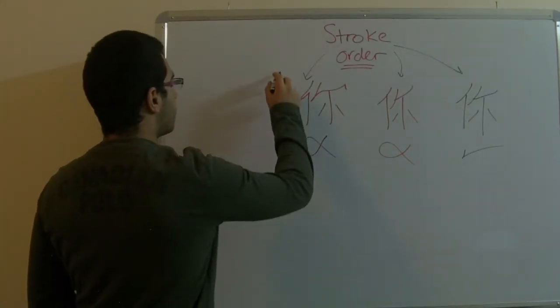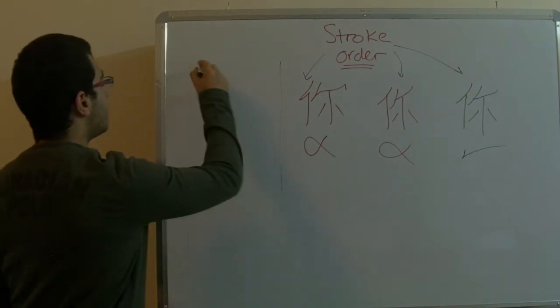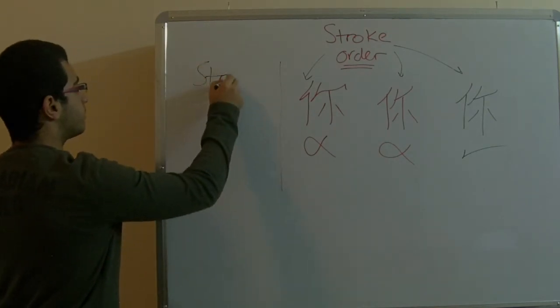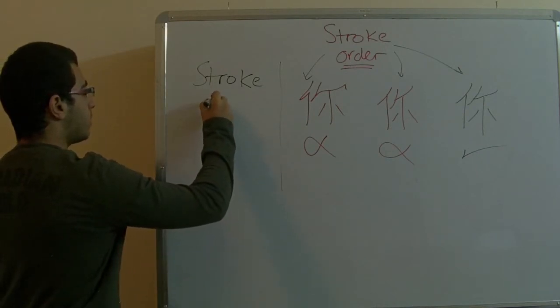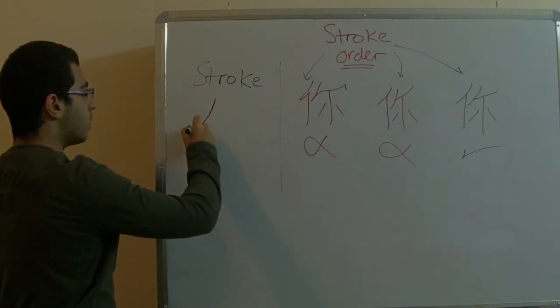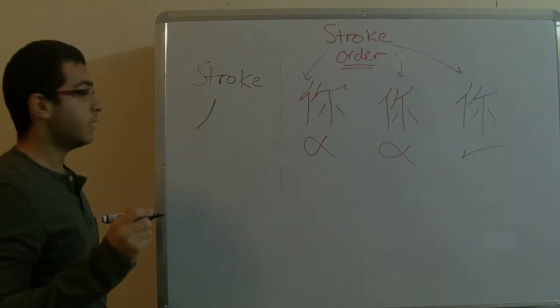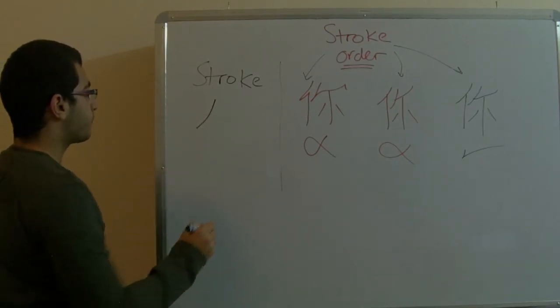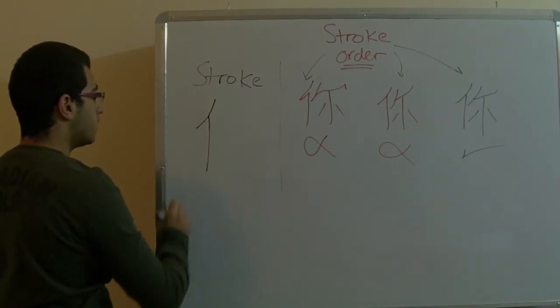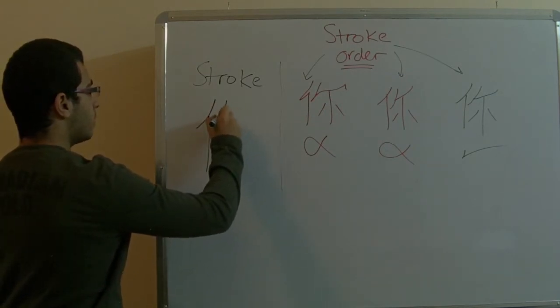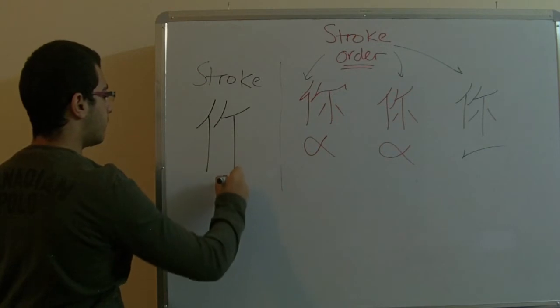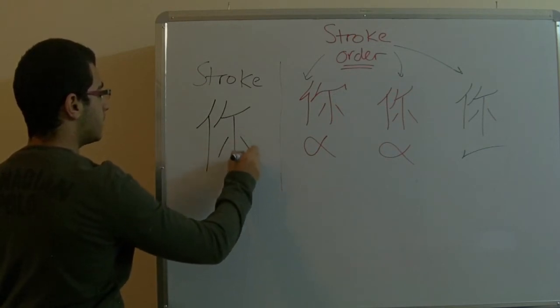So, first we must know the meaning of the stroke. When I put my pen on the paper, on the board, and draw a line, release my pen, this is called a stroke. Another stroke is like this, another one, third, fourth, fifth, sixth, and seventh.